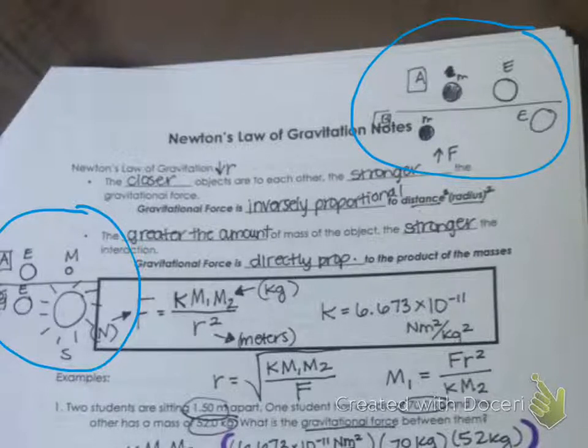So knowing these different relationships, I ask them, what is my equation going to look like? They tell me, since force and mass are directly proportional, the masses will be on top. And since force and distance are inversely proportional, then distance or the radius is going to be on the bottom.